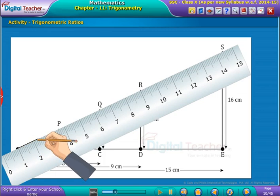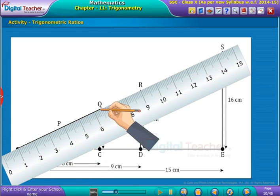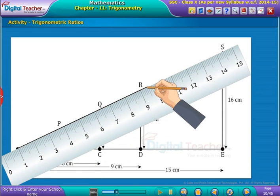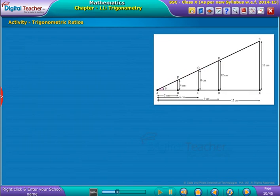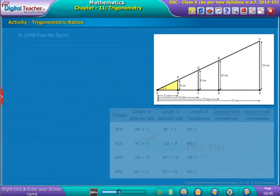Join the points A and P, P and Q, Q and R, and R and S. Now, let us do an activity to find different lengths and their ratios from the figure drawn on screen.